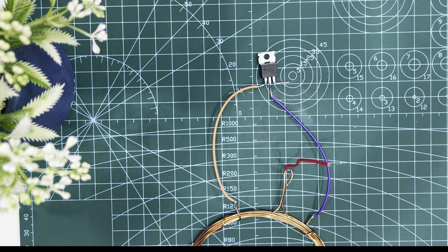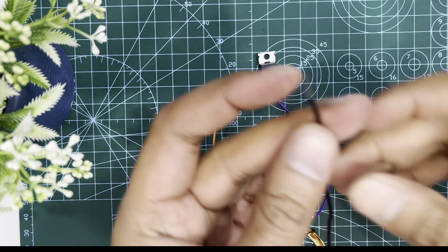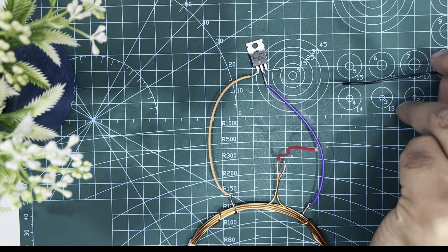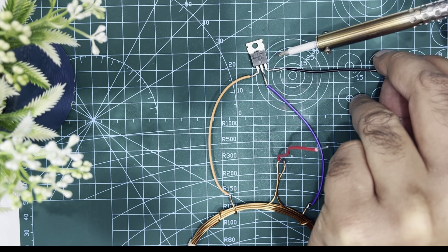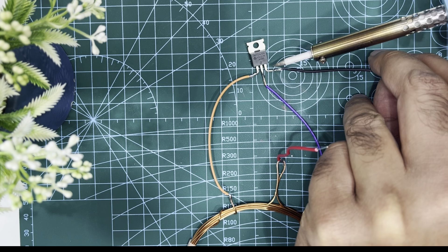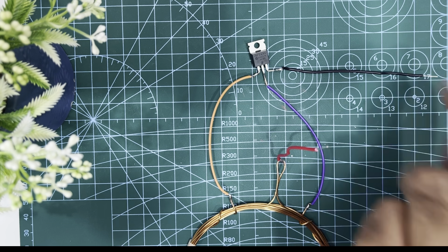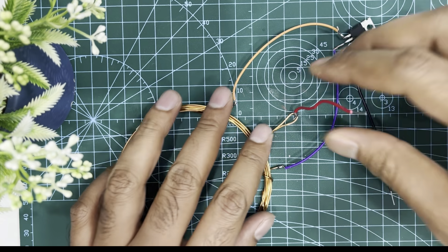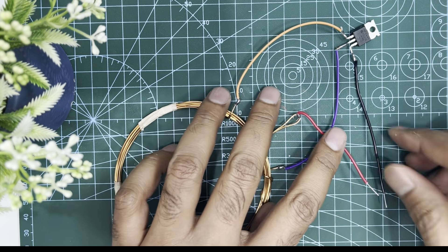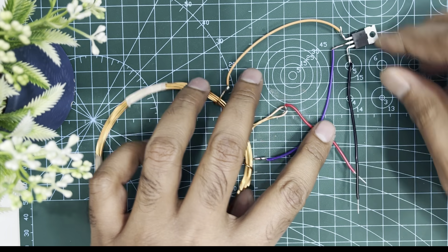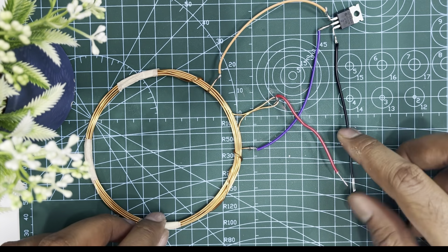After soldering the gate and drain terminals with the two ends of the coil, take a piece of wire and connect it with the source terminal of the MOSFET. You can see I used a black wire. Now I have one wire from the center loop of the coil and another from the source terminal of the MOSFET.